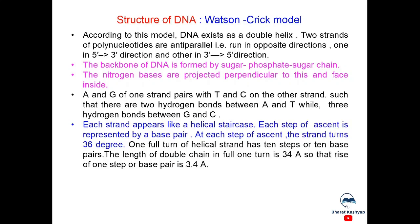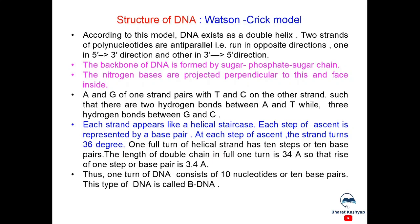Each strand appears like a helical staircase. Each step of ascent is represented by a base pair. At each step of ascent, the strand turns 36 degrees. One full turn of helical strand has 10 steps or 10 base pairs. The length of double chain in full one turn is 34 angstrom, so that rise of one step or base pair is 3.4 angstrom. Thus one turn of DNA consists of 10 nucleotides or 10 base pairs. This type of DNA is called vDNA.